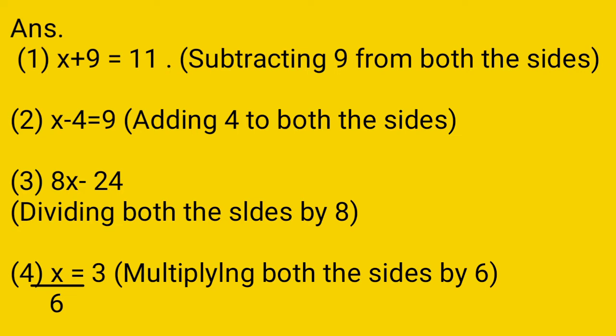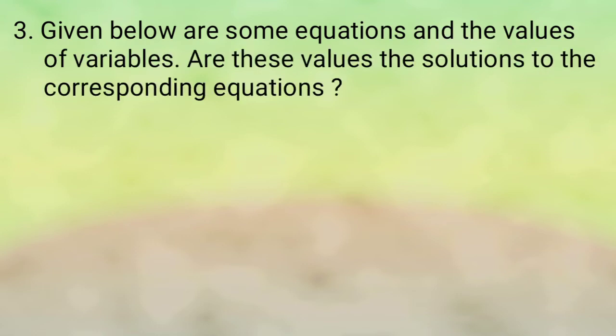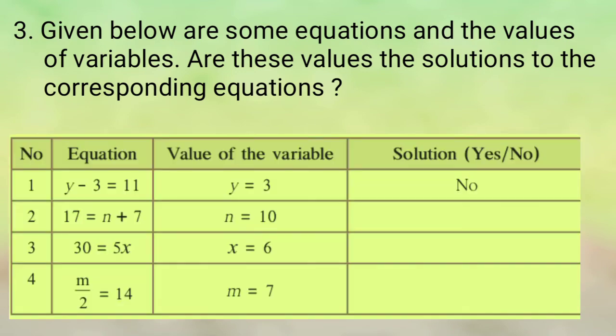The next question has a table. Given below are some equations, and we check whether the following values of variables are solutions to the corresponding equation. In this table, the first column is number, then the equation, then value of the variables, and the answer should be written as yes or no. Here 4 equations are given. The first one, y minus 3 — is y equal to 3? No. The answer is already given.